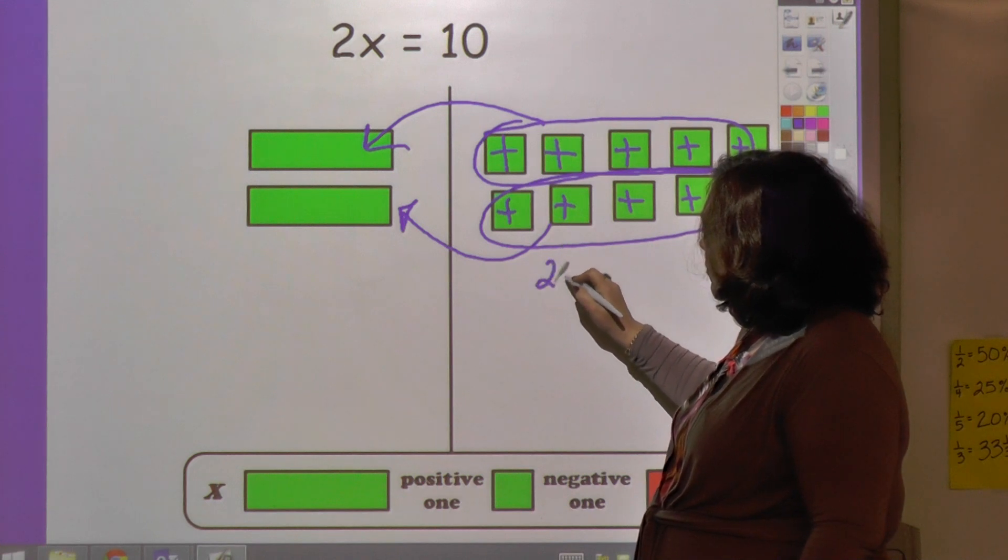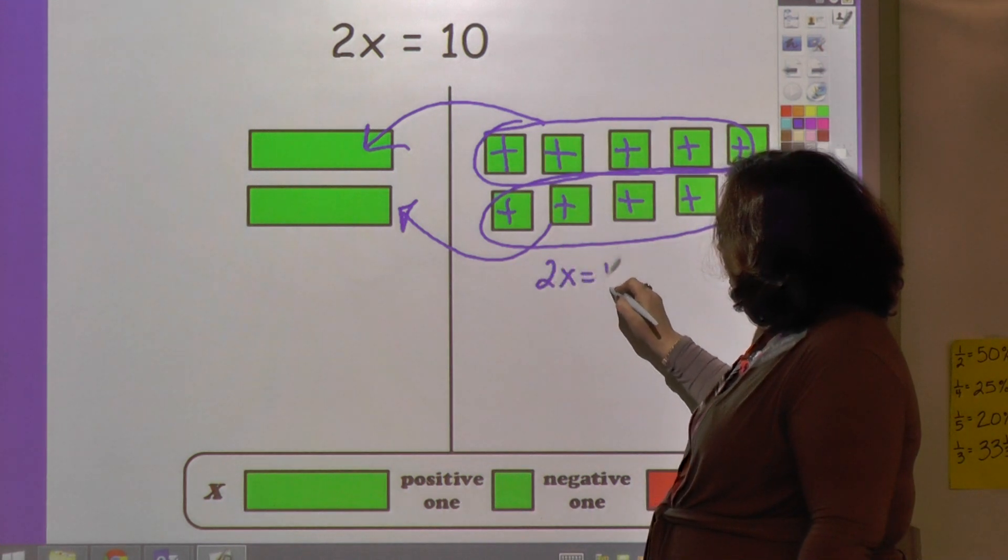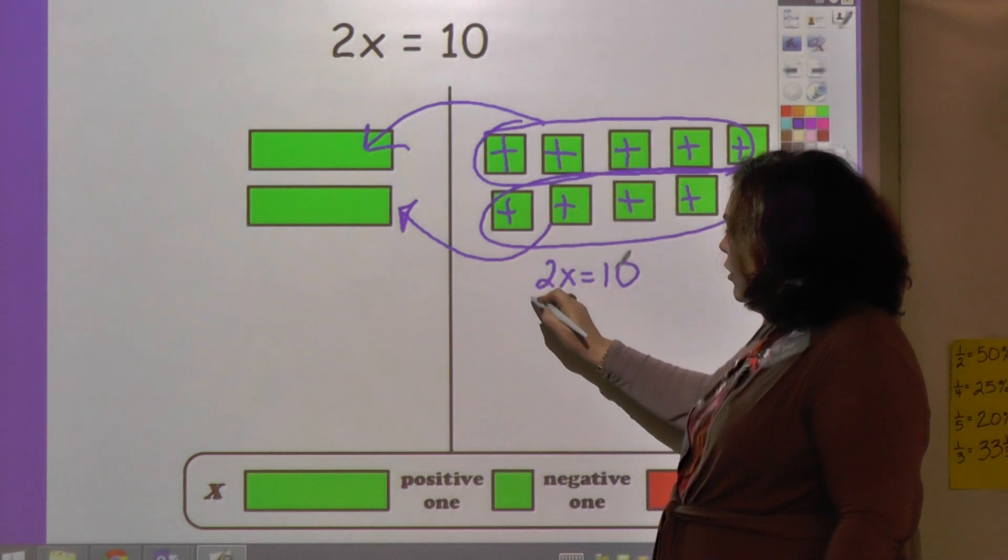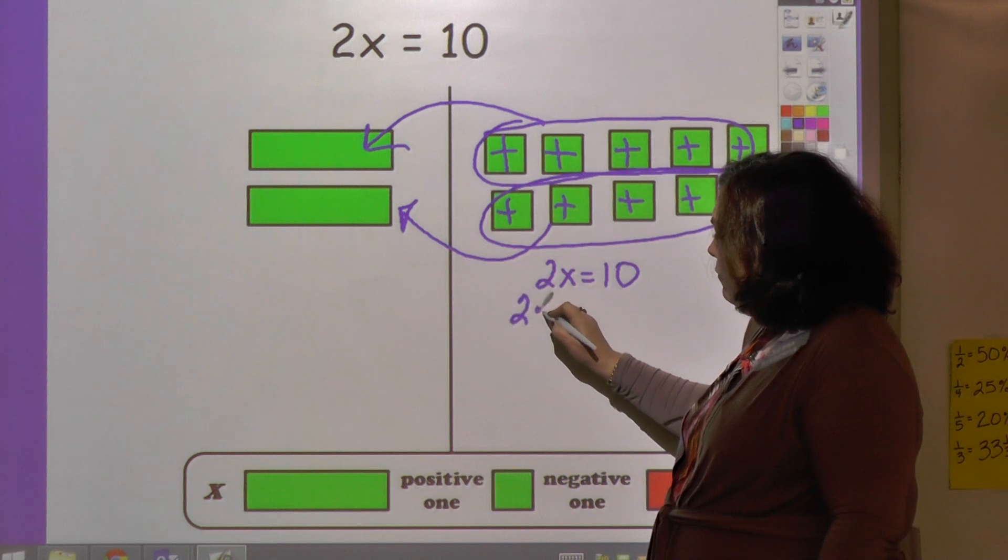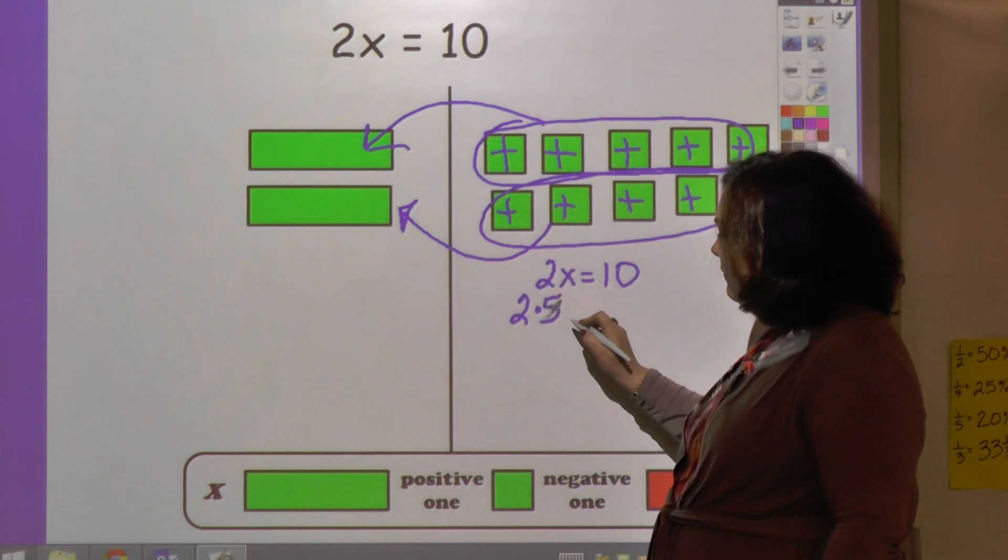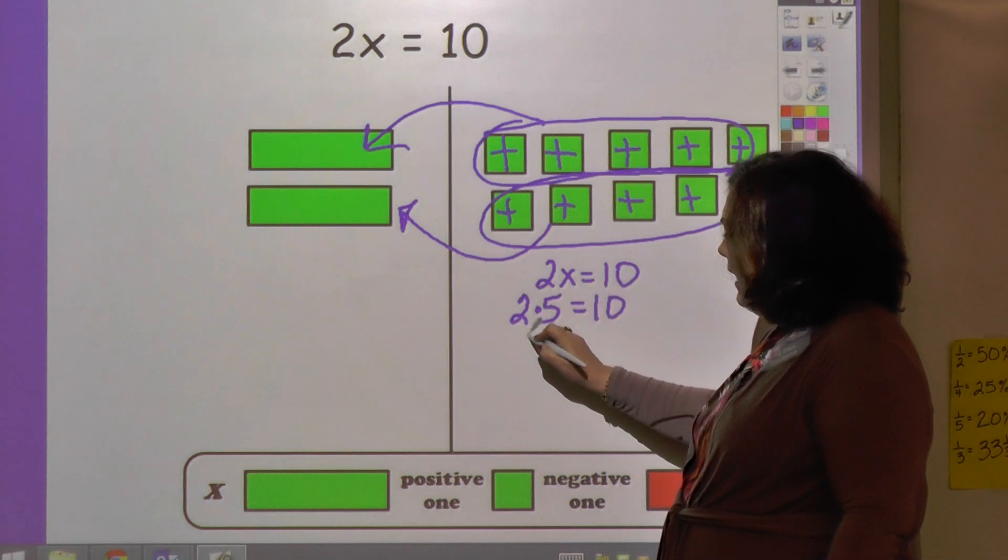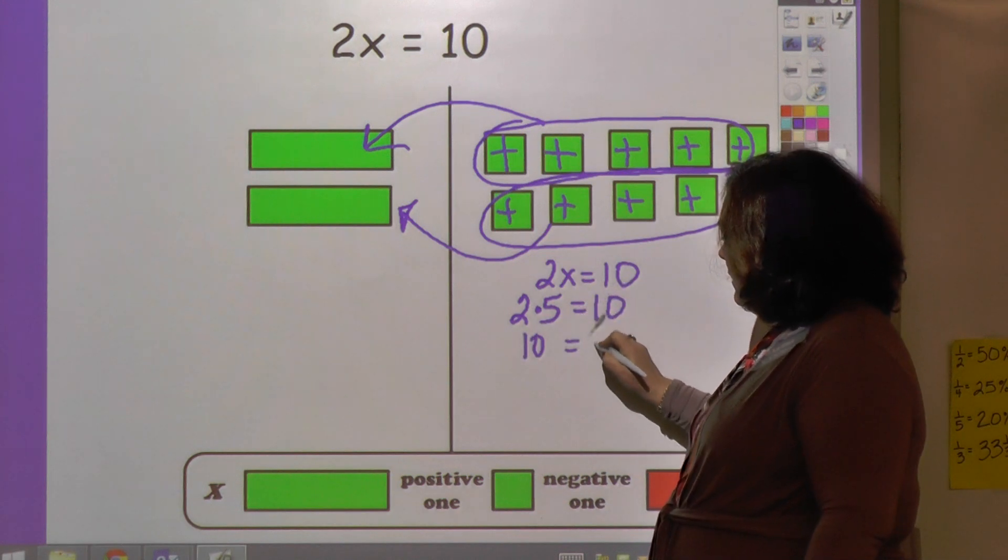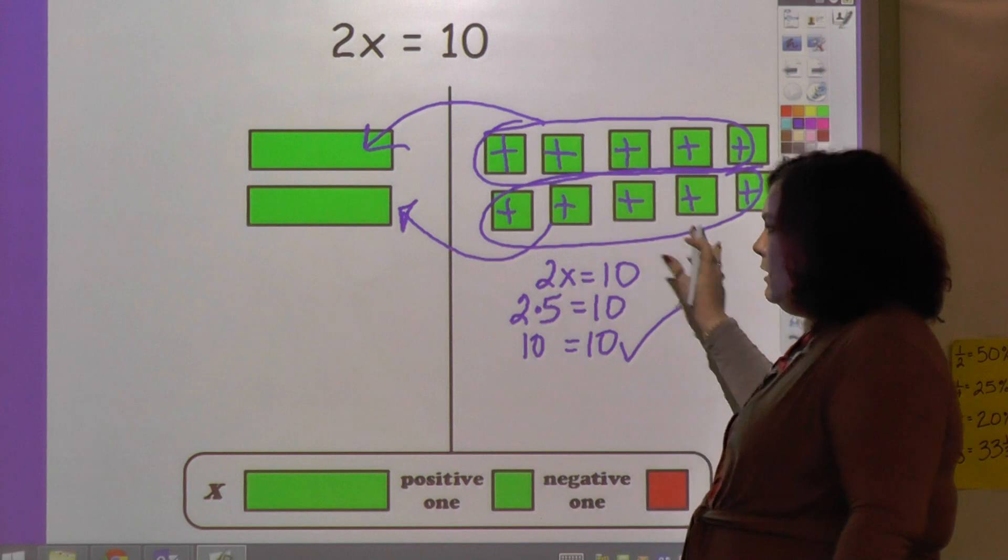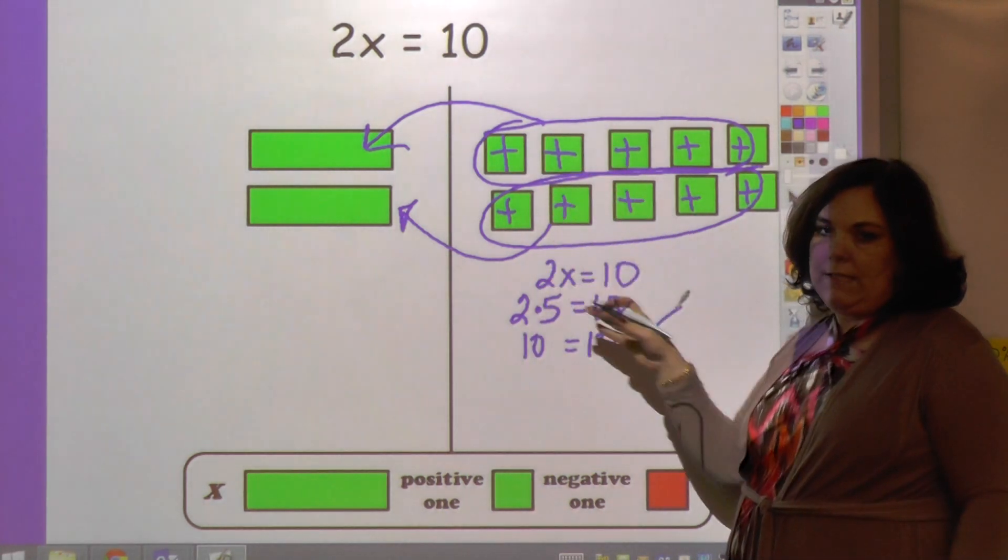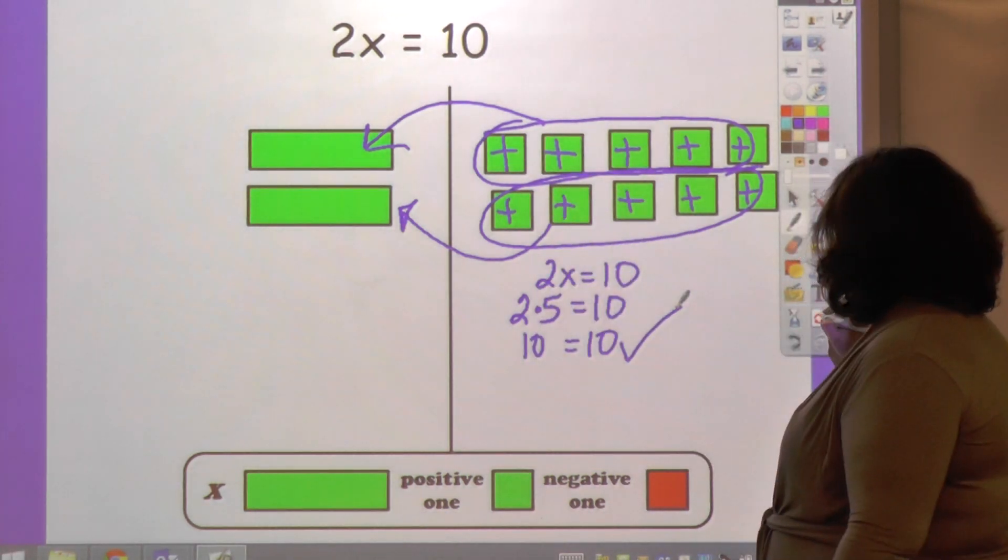So now I go back in and I say 2x equals 10, that's my equation. 2 times what I found x to be, 5, equals 10, and 10 equals 10. So it checks, it checks out number-wise and it checks out picture-wise.